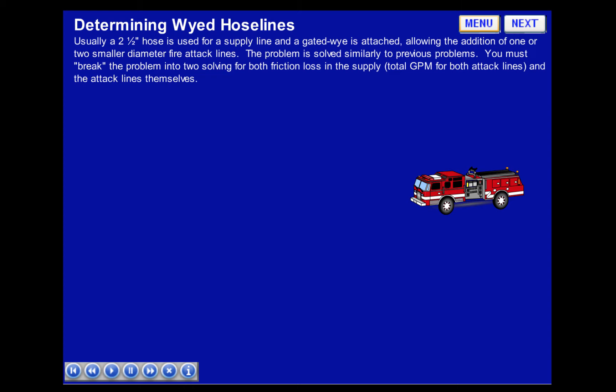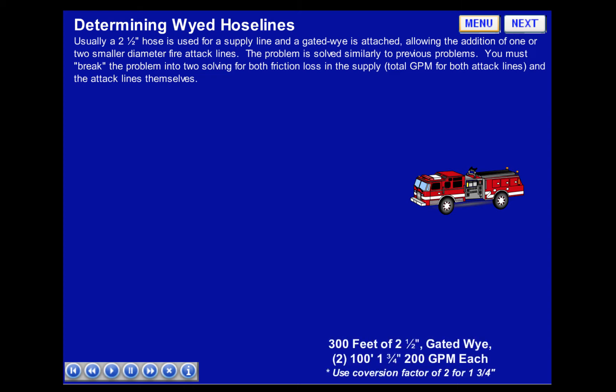The problem is solved similarly to previous problems. You must break the problem into two parts, solving for both friction loss and the supply total GPM for both attack lines, and the attack lines themselves. In this scenario, the firefighters are ordered to pull 300 feet of 2.5-inch hose, attaching a gate Y and flowing two 100-foot, 1¾-inch hose lines, each flowing 200 GPM.